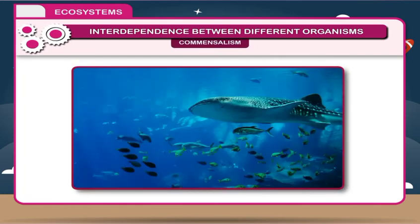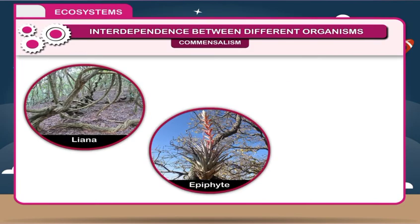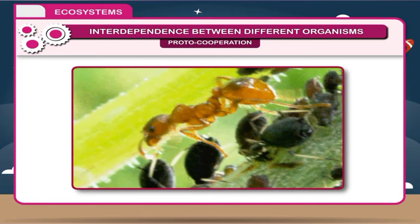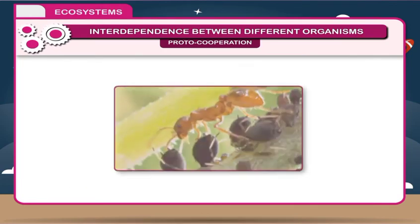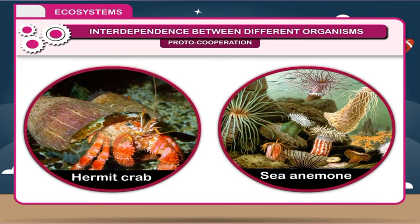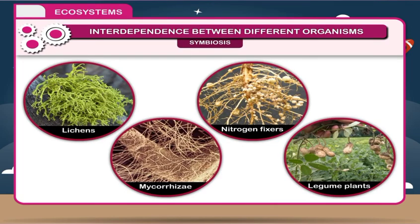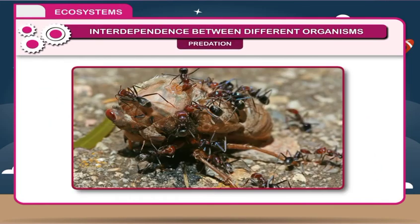Commensalism: It is an association between two organisms in which one is always benefited, but the other is neither benefited nor harmed. Examples include Liana, Epiphyte, and Epizoans. Proto-cooperation: It is an interaction between two different species which is favorable but not obligatory to both. Example: the association of hermit crab and sea anemone. Symbiosis: It is an interaction between two species in which both are benefited. Examples include Lichens, Mycorrhizae, and nitrogen fixers in legume plants. Predation: Predation is a direct food relationship between two species in which one is called the predator, who captures prey and eats it.